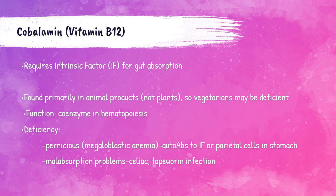Vitamin B-12, or cobalamin, functions as a coenzyme for the production of red blood cells. Patients that have a deficiency of vitamin B-12 have megaloblastic anemia, or pernicious anemia. In this anemia, the patient will have an increase of larger macrocytic red blood cells in the peripheral bloodstream. Vitamin B-12 is found primarily in animal products and is not present in plants, so vegetarian or vegan dieters may be deficient in vitamin B-12.